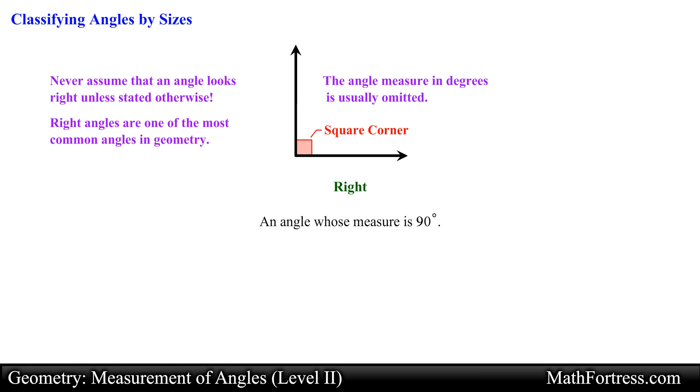Notice that if an angle is labeled with this symbol, the angle measure in degrees is usually omitted. This symbol is also used to describe a special type of intersection between two lines or segments. When two lines form a right angle, they are said to be perpendicular.